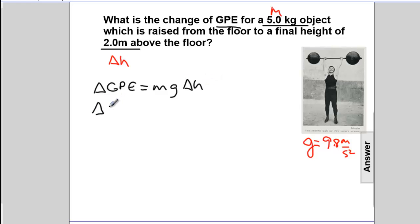Substituting the numbers: change in GPE equals mass, 5 kg, times gravity, 9.8 meters per second squared, times change in height, 2 meters.